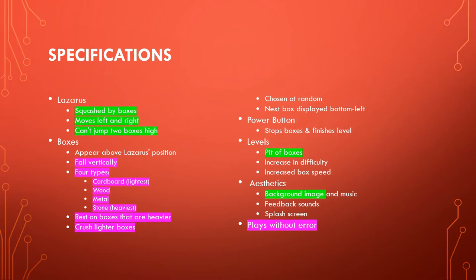So this is going to be quite a significant video, because we're going to be working on the boxes where we're going to get them to fall vertically. We've got our four types of boxes, from cardboard through to stone. We're going to have boxes that rest on boxes that are heavier than them, but they crush the boxes that are lighter than them, and we need to make sure that we can test this and ensure that it plays without an error.